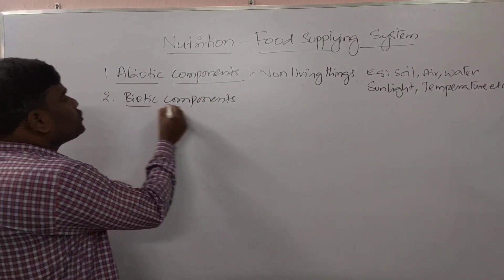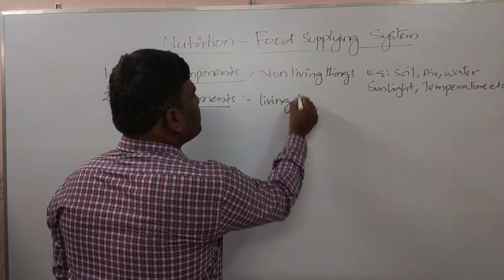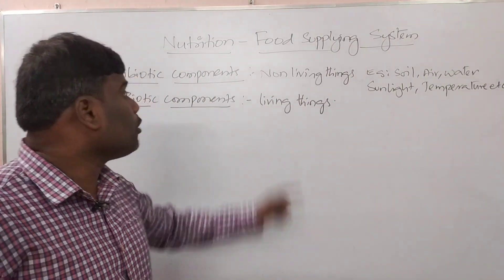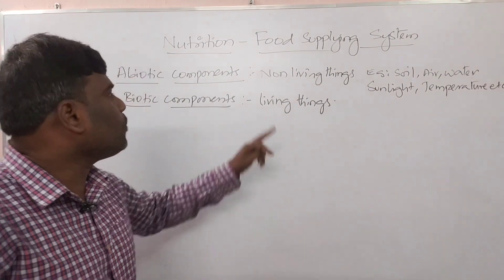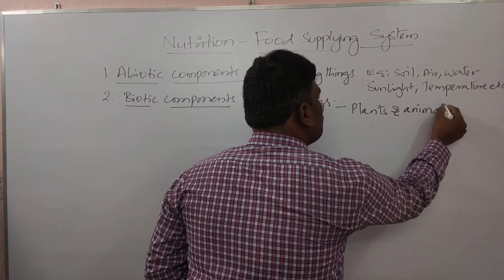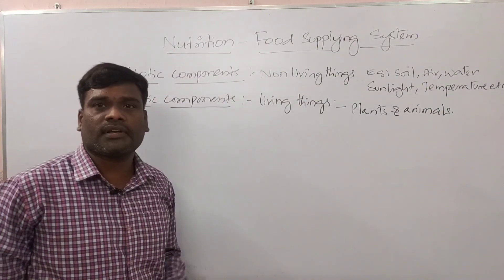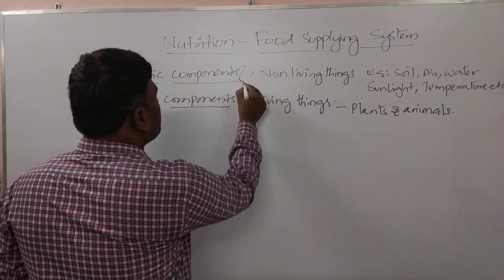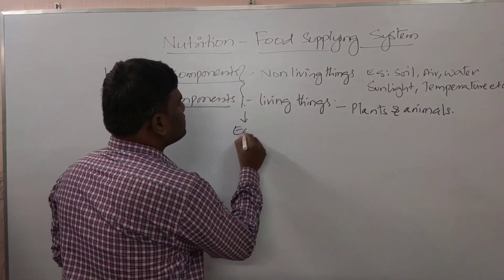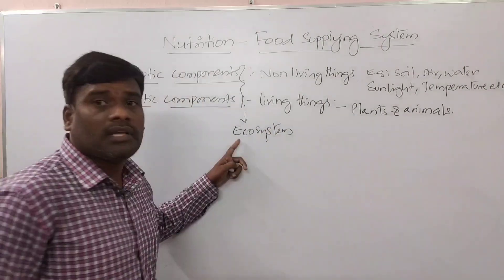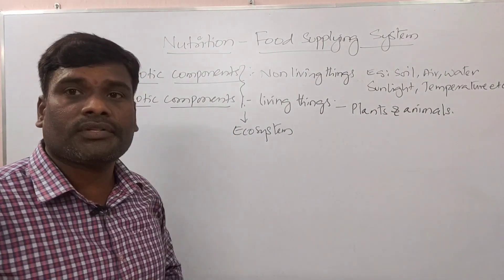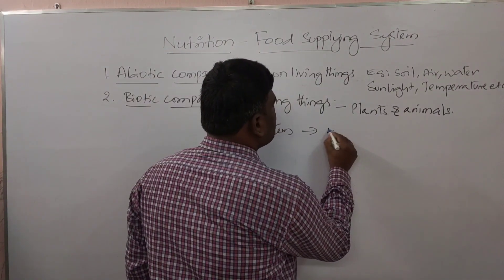Biotic components simply means living things — which have life in them. Plants and animals are included in biotic components. The interaction between these biotic components as well as abiotic components is called an ecosystem. The study of this ecosystem is called ecology.